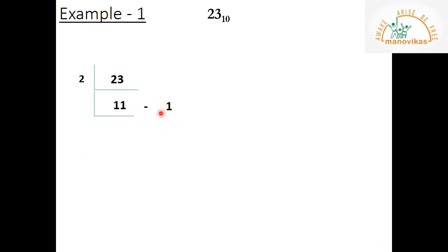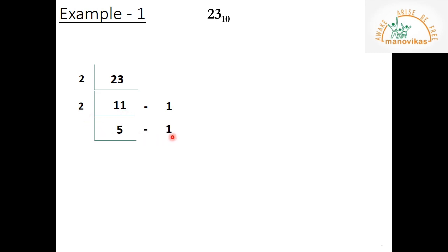Please divide and check if you have any difficulty understanding this. Take 23 and divide by 2, writing the quotient and remainder in their respective places. Continue as per the rule until the quotient becomes 0. Divide 11 by 2: it goes 5 times, so the quotient is 5. Since 5 times 2 is 10, what is left is 1 — so the remainder is 1.